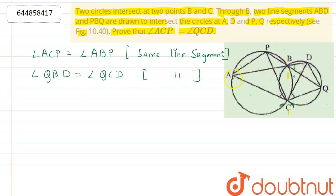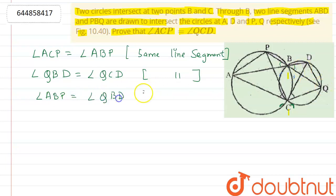Now, lines AD and PQ intersect at B, so angle ABP is equal to angle QBD by vertically opposite angles.